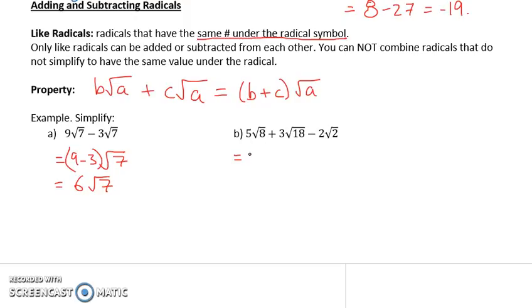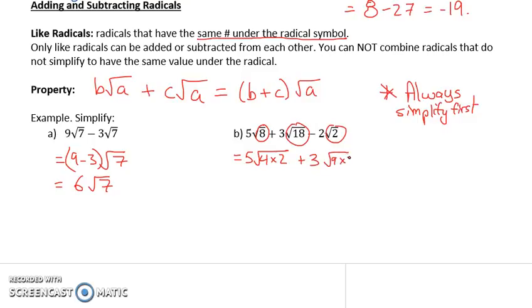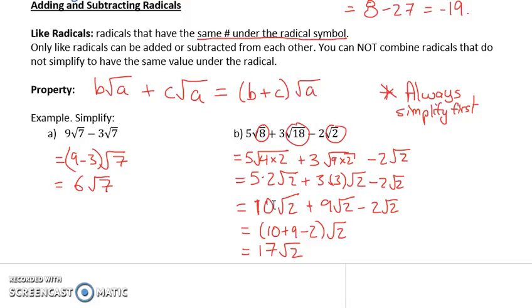In the case of B, this looks a little more confusing. But, remember, we want to be able to try to simplify these first. Always try to simplify first. What that means is 5 root 8 can be written as 5 root 4 times 2. And 18 can be written as 9 times 2 minus 2 root 2. And that gives me 5 times 2 root 2 plus 3 times 3 root 2 minus 2 root 2. Which gives me coefficients of 10, 9, and negative 2. And because they all have the same root, it gives me...